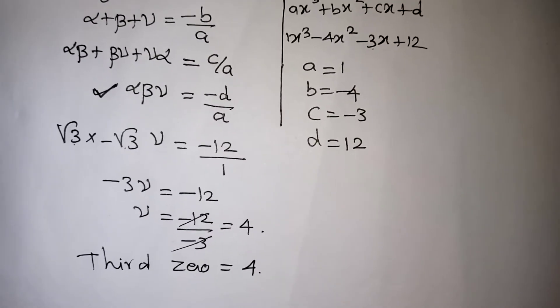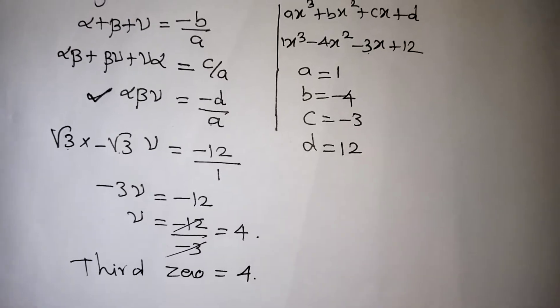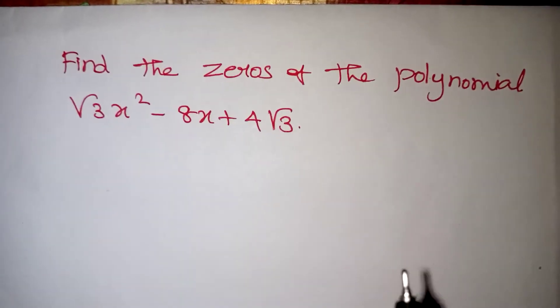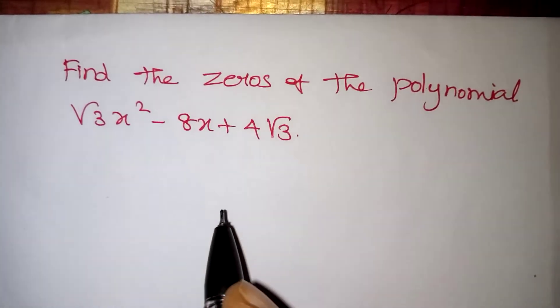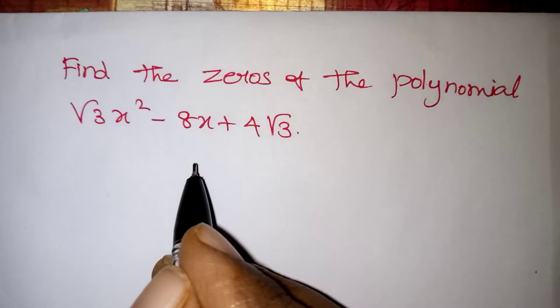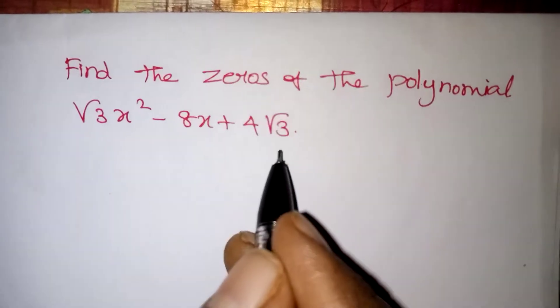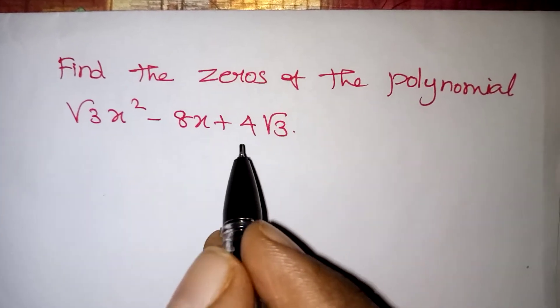We will move on to the next problem now. Find the zeros of the polynomial: root 3 · x² - 8x + 4·root 3. That is our question.